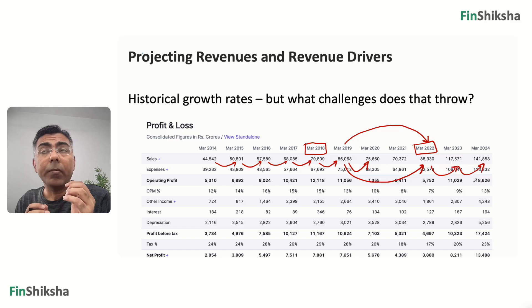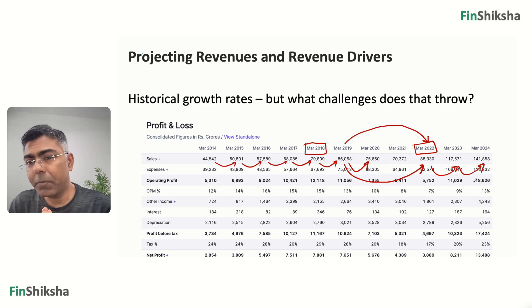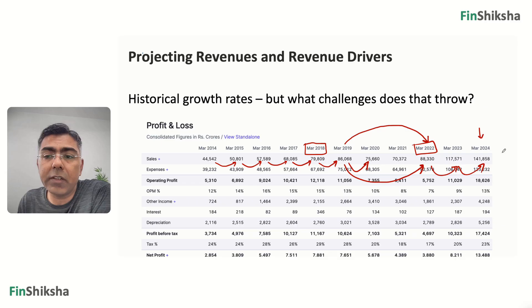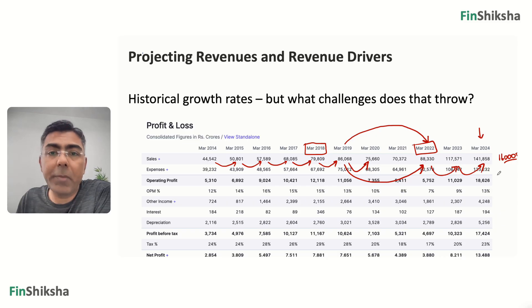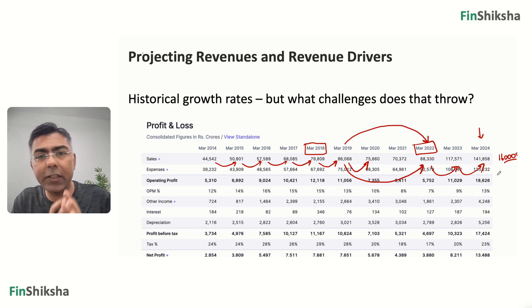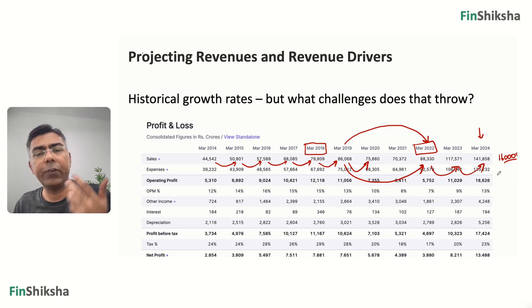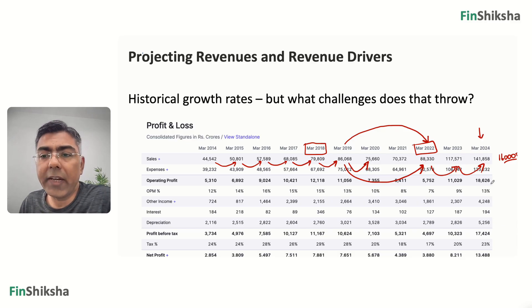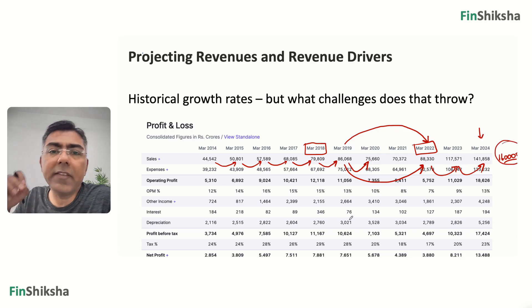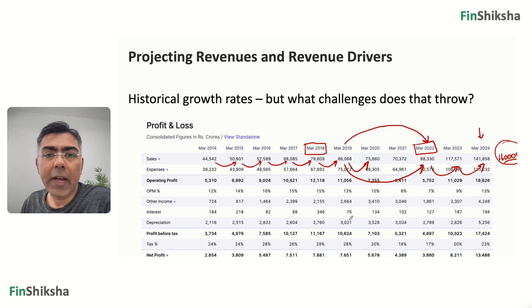There is another problem. Let's say I'm sitting in 2024 and I project revenues for 2025, saying next year revenue will be 1,60,000 crore. Maybe it is, maybe it isn't. When you're building a financial model, it's an ongoing process — you keep revisiting the model, refining your assumptions, coming back to understand it. If next year that assumption goes wrong, where exactly did I go wrong? I don't know that. That's the second challenge with just using historical numbers.